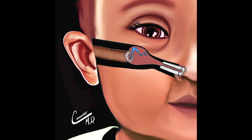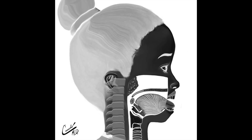Children are predisposed to having recurring ear infections because of eustachian tube dysfunction. Upper spine instability, called atlantoaxial instability, is seen in about 10 to 30 percent of Down syndrome patients.